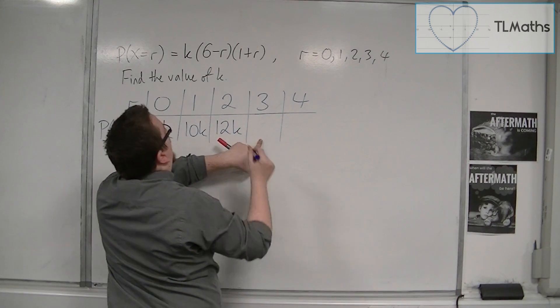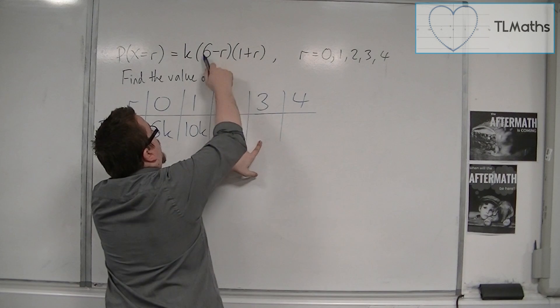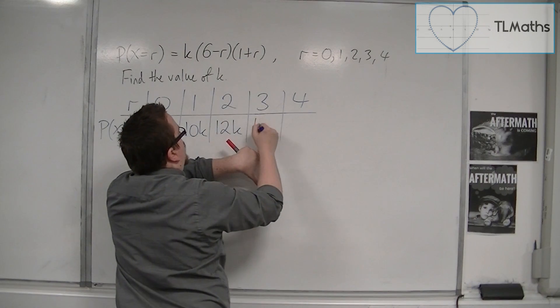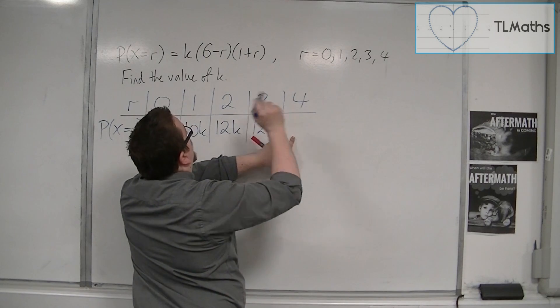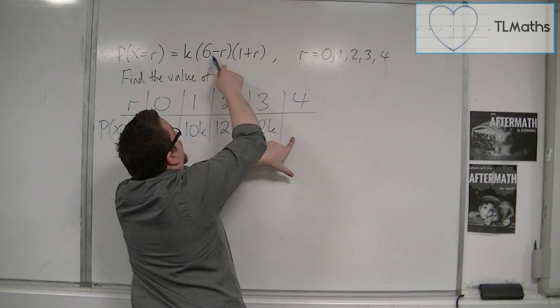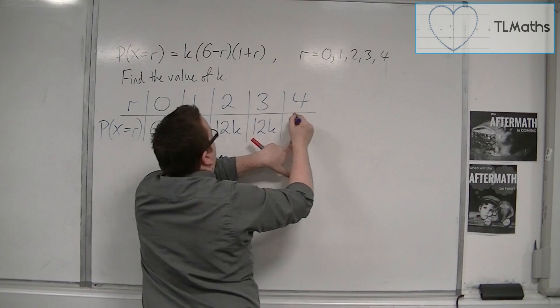When r is 3, we've got k times 3 times 4, so 12k again. And finally, when r is 4, we've got k times 2 times 5, so 10k.